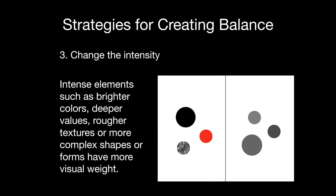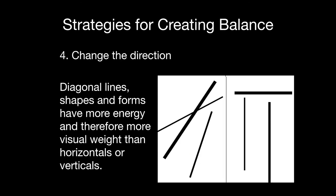The third strategy for creating balance is to change the intensity. There are certain elements in art and design that are more intense. For example, if you have two circles and one is gray and one is red, the one that's brighter is considered more intense. Likewise, deeper darker values, rougher textures, and more complex shapes — for example, a star is considered more intense than a circle. Doing any of these things will make more visual weight than having something simpler or more muted. You can also change the direction of things. Diagonal lines are kind of our party lines — same for shapes and forms. Diagonals have more energy and therefore more visual weight than horizontals or verticals, so you can use them to counterbalance something.